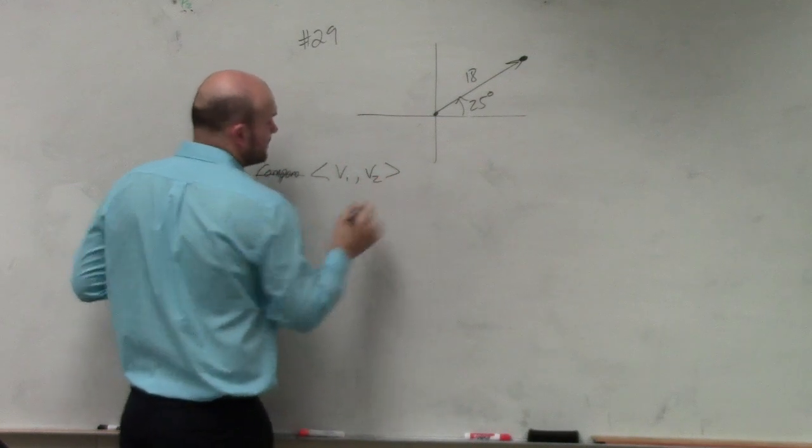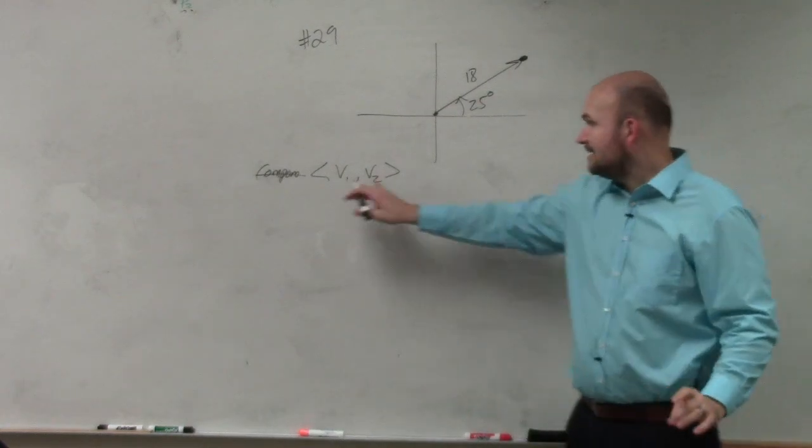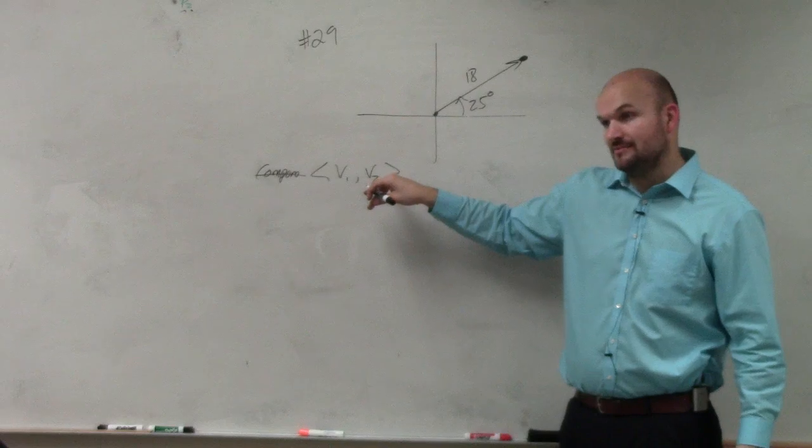v1 comma v2. We know component form, the initial point is at 0, 0, and the ending point is at v1, v2. So that's component form.